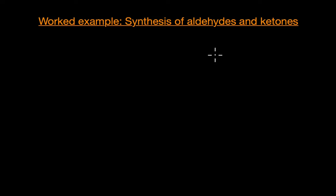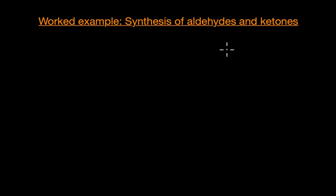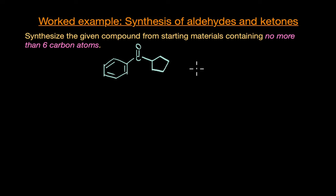This is part 3 of our worked example series on the synthesis of aldehydes and ketones. Without further introduction, let's look at the first question: we need to synthesize the given compound from starting materials containing not more than 6 carbon atoms.